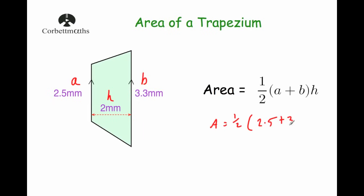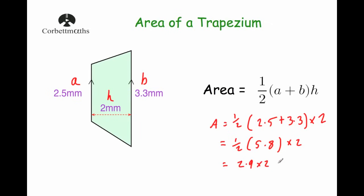So the area equals one half of a plus b, which is 2.5 plus 3.3, times by the height of two. 2.5 plus 3.3 is 5.8, then times by two. We can halve 5.8 to get 2.9 and times by two, which equals 5.8 millimetres squared. That's the area of that trapezium — 5.8 millimetres squared. Make sure you're careful with the units.